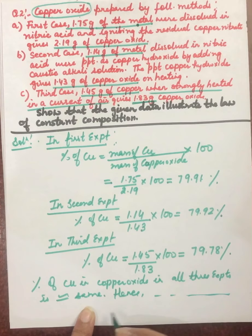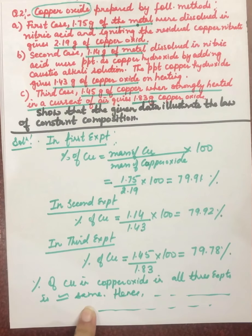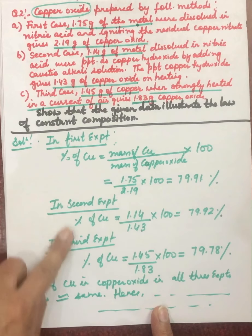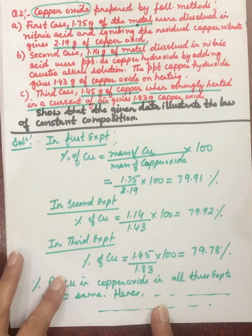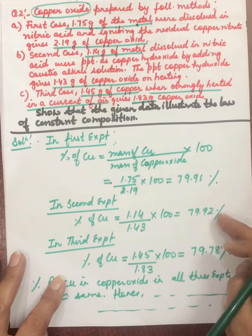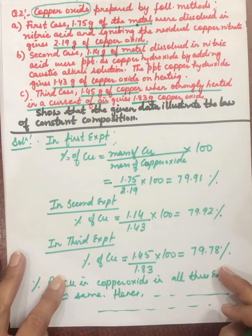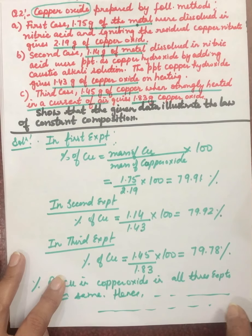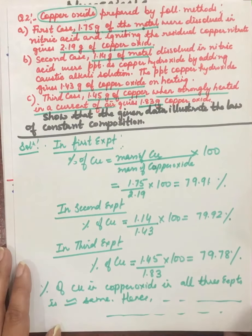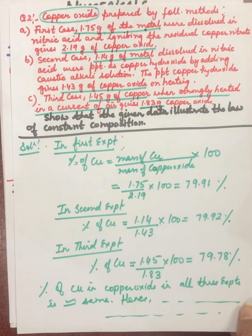Hence, this illustrates the law of constant composition. In the law of constant composition, we find the percentage of one element in all the given cases, and if that percentage comes out to be the same every time, it illustrates the law. Now, moving on to the next law — the law of multiple proportions.